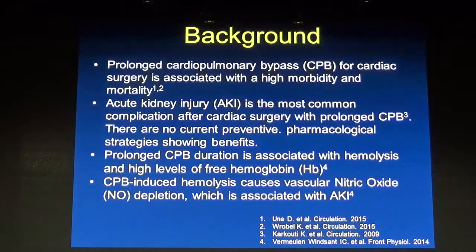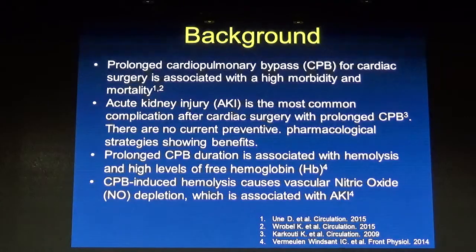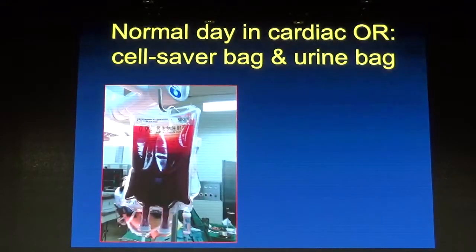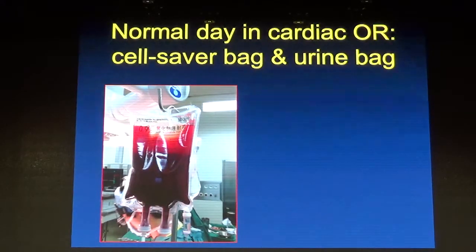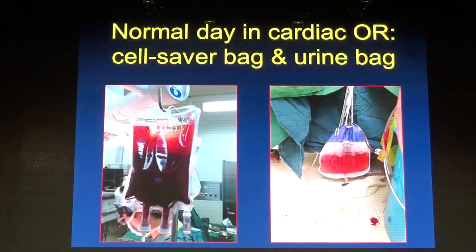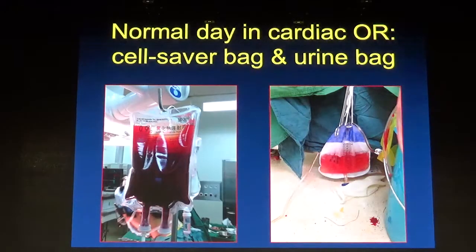Cardiopulmonary bypass-induced hemolysis causes vascular nitric oxide depletion in the plasma, which is associated with acute kidney injury. This is what we generally see when working in cardiac surgery as an anesthesiologist — lots of plasma hemolysis, red cells in the blood saver, and urine tinged with blood in the urinary bag.